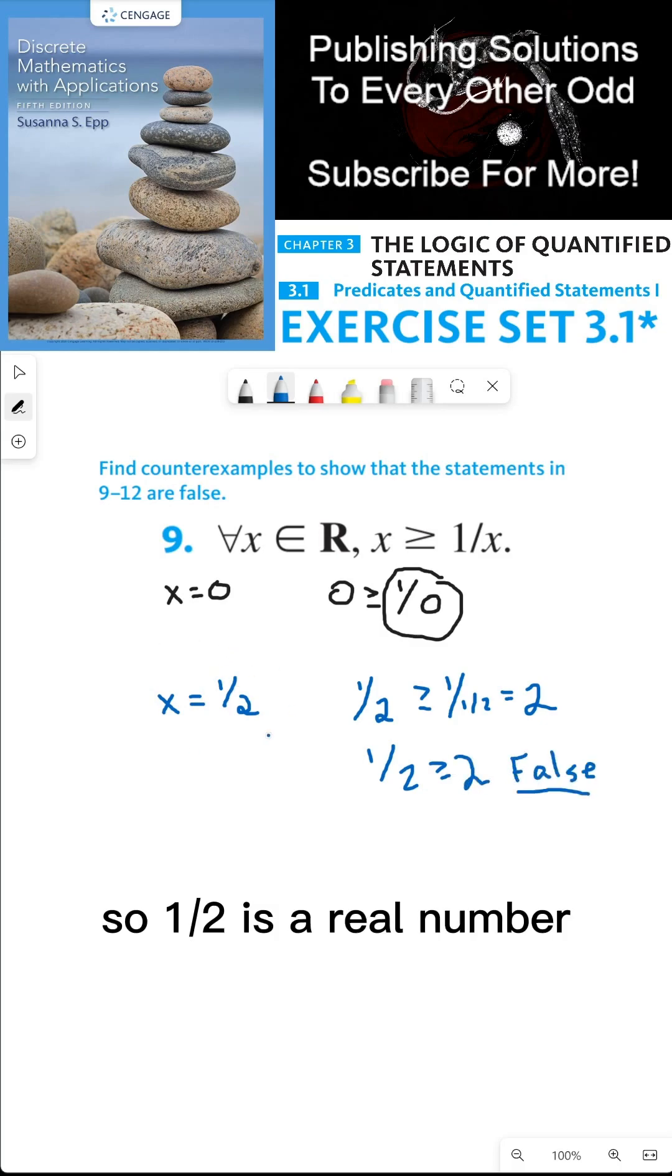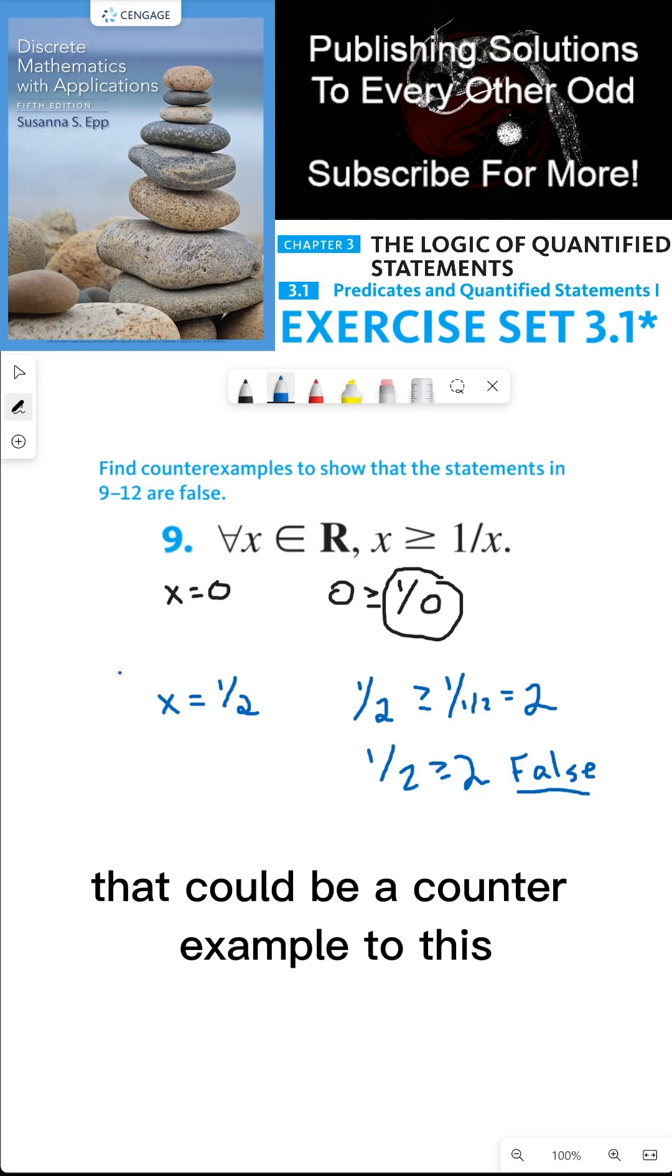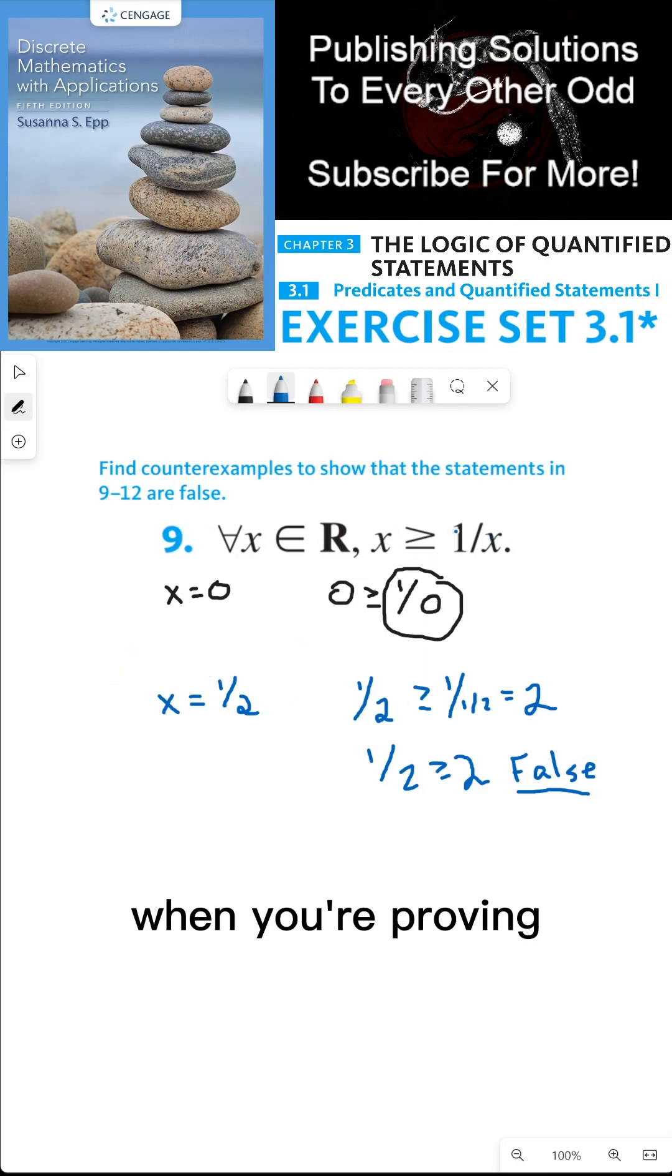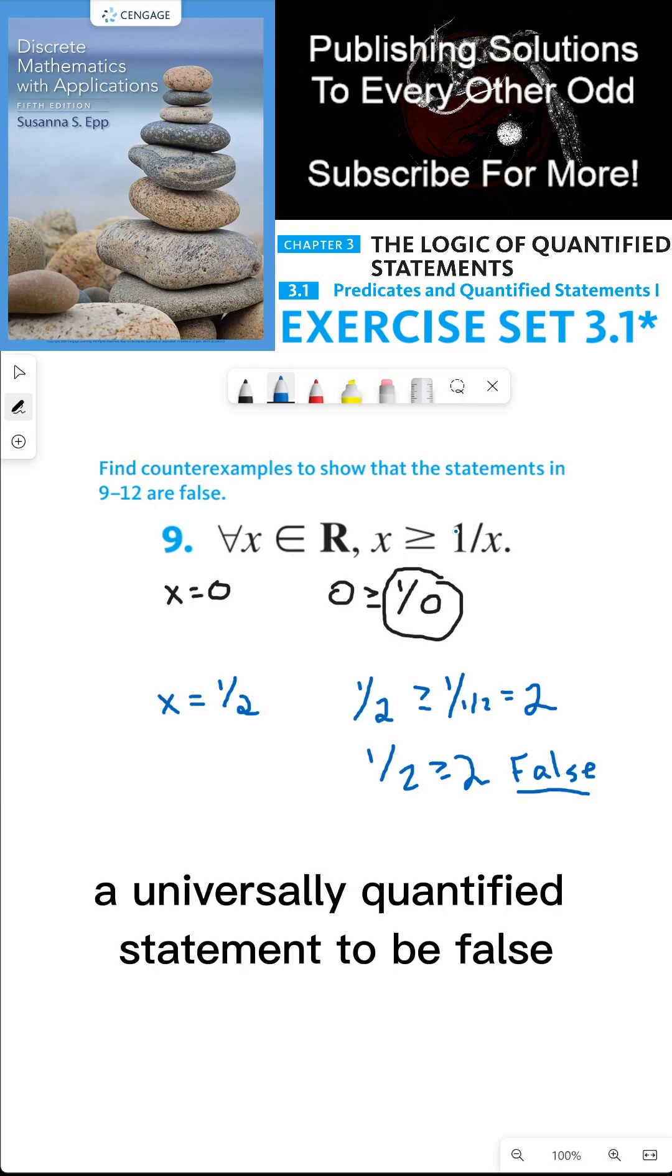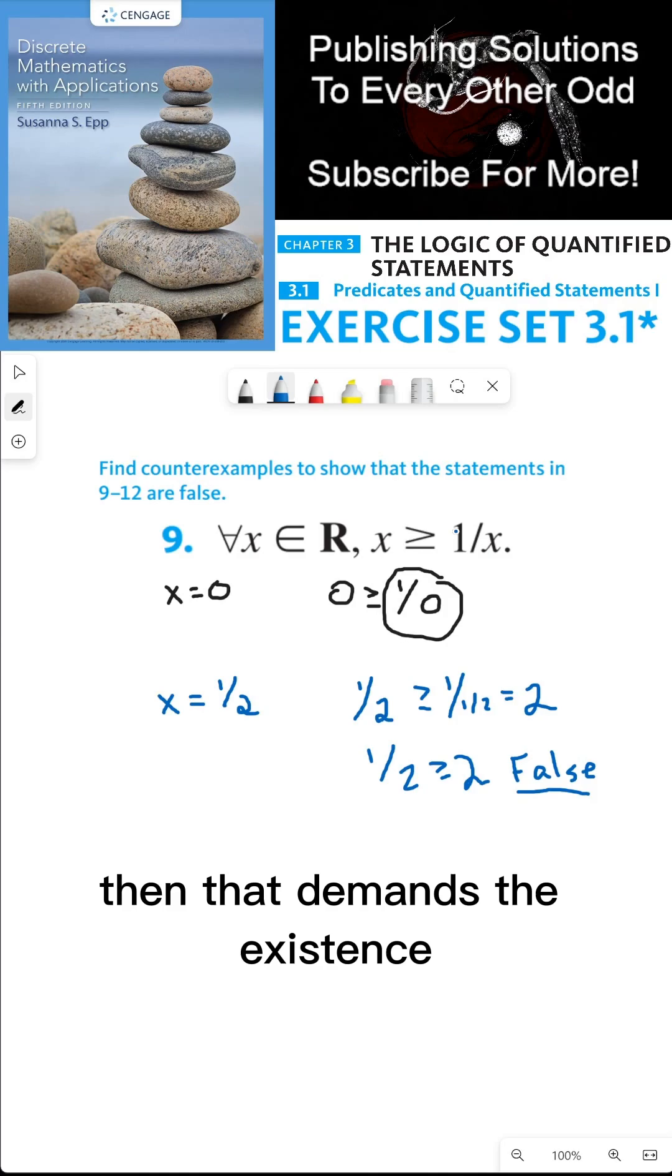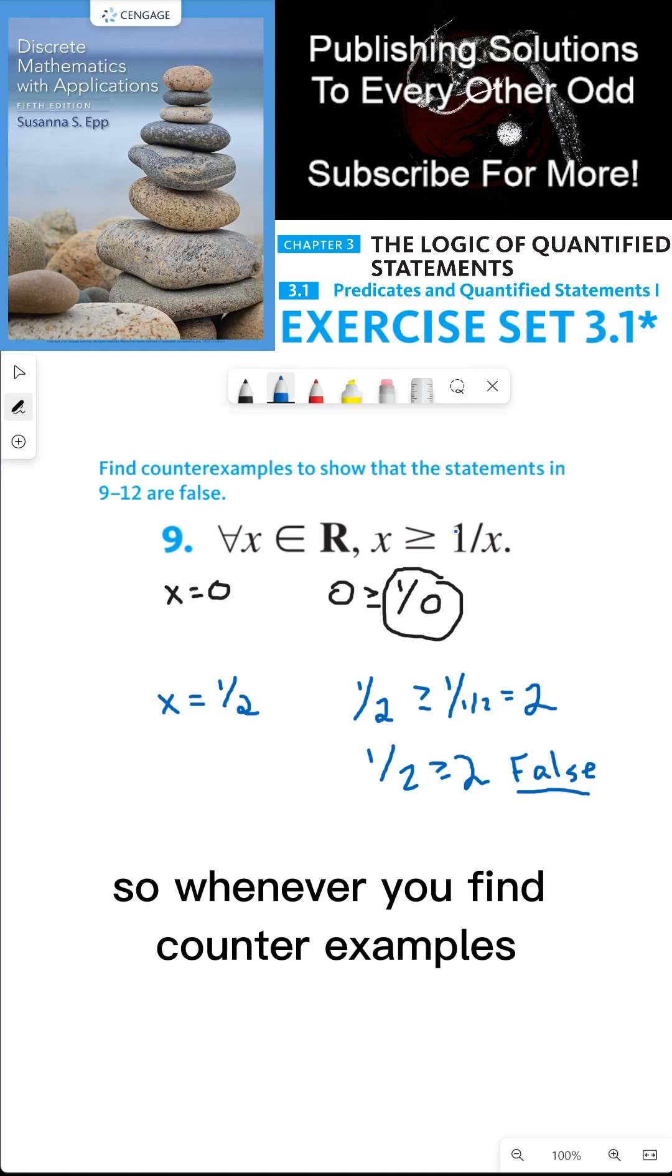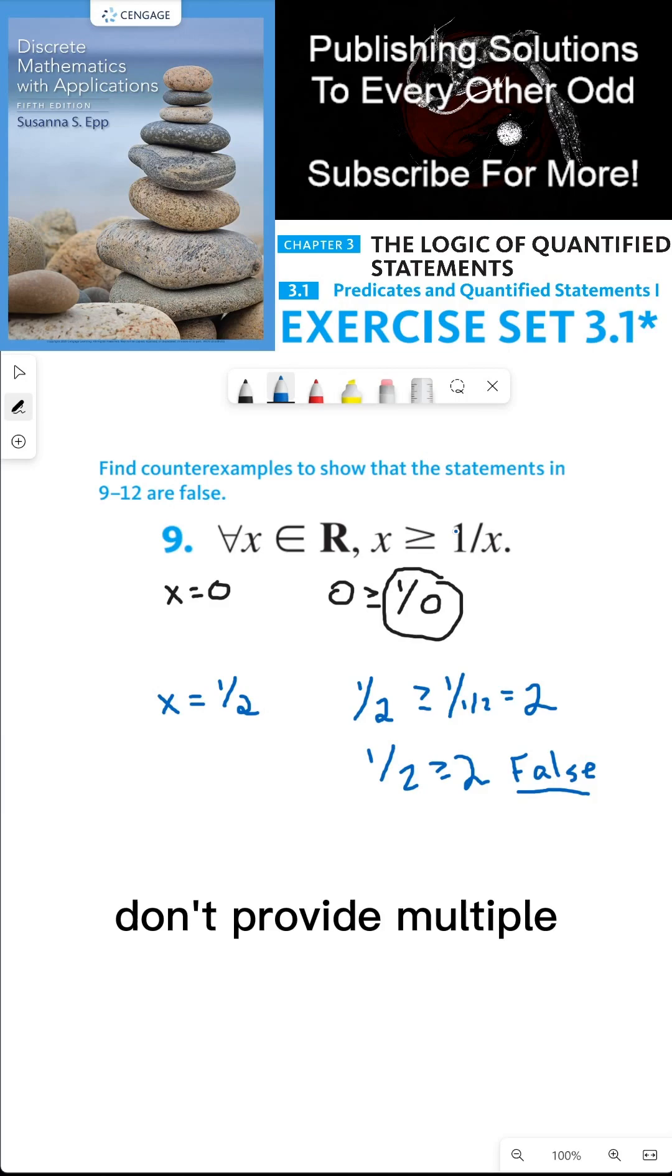So one half is a real number that could be a counterexample to this universally quantified statement. When you're proving a universally quantified statement to be false, then that demands the existence of one counterexample. So whenever you find counterexamples, don't provide multiple, just provide one.